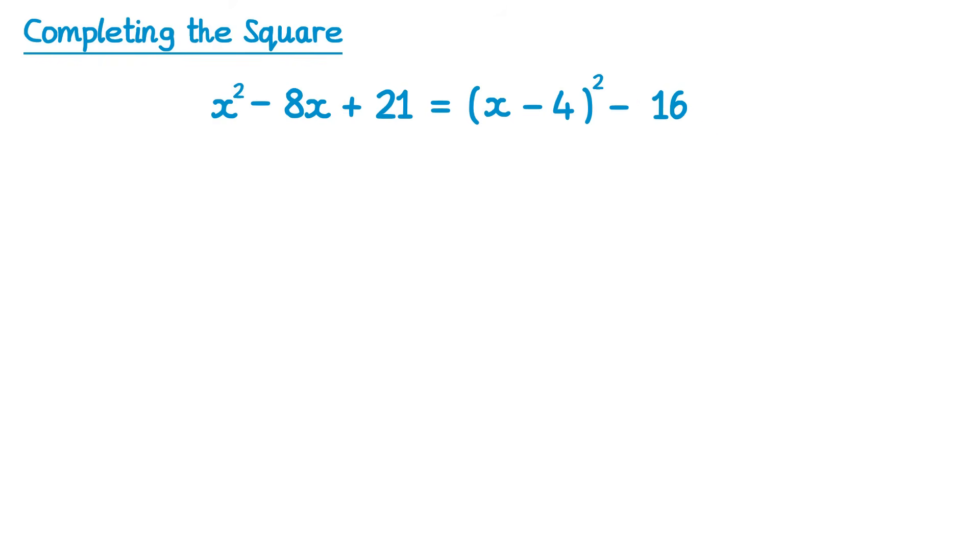Some people find this a bit confusing at this point, and think it may need to be a positive, but it isn't. Remember when we squared the bracket, we would get a plus 16, and the goal of this negative 16 is to cancel out that positive 16 that the bracket gave. So actually at this point, you're always going to be taking away a number, no matter what sign the number in the bracket is.